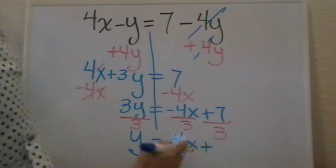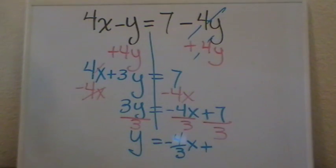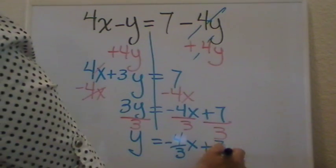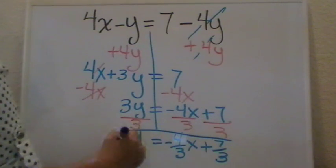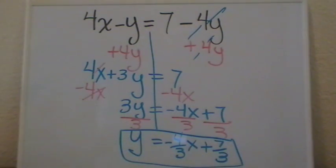Plus—and again we cannot make this division, so we just leave it as a fraction—7 over 3. This right here will be your final answer.